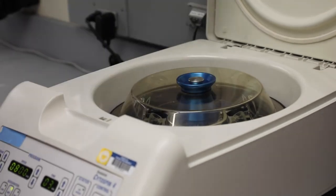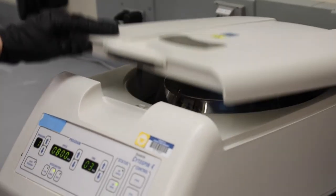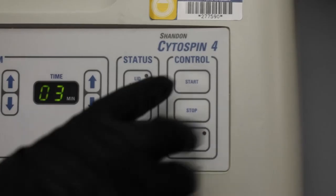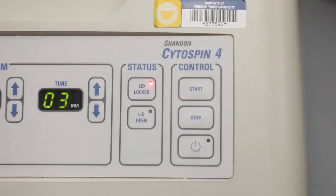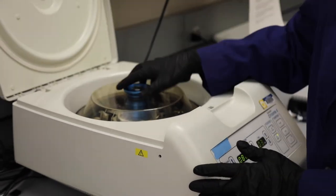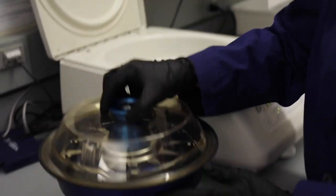For normal eukaryotic cells, ideal settings are 800 rpm for 3 minutes. When the machine is done spinning, a jingle will play. It's then safe to open the centrifuge and remove the rotor.